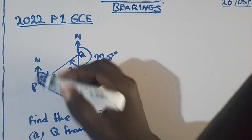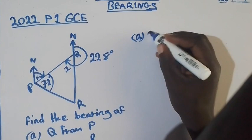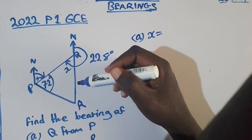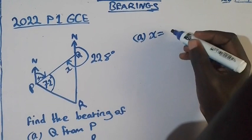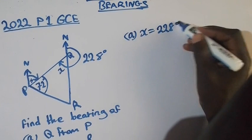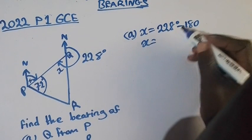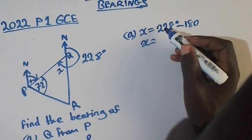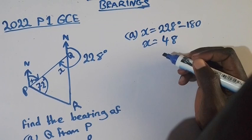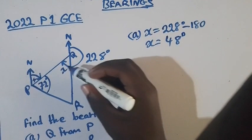So we are going to label this angle as X. So that even this one will be X. So X equal to... This is a straight line. So for the straight line, we need to subtract 180 from 228. You know that a straight line adds up to 180. So I will say 228 minus 180. So X equal to 8 minus 0, it's 8. Then 2 minus 8, it can't, you borrow 1 from 2, which is going to become 12. So 12 minus 8, it's 4. So we are going to have 48 degrees as the value of X.